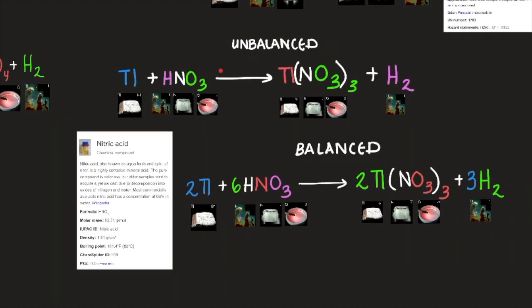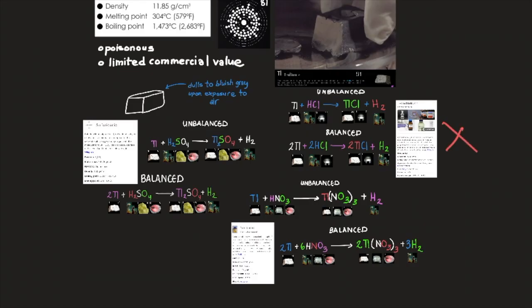Here we have thallium combined with nitric acid to form thallium nitrate and hydrogen gas. And here's the balanced formula. So in nitric acid, thallium dissolves rapidly. Thallium dissolves slowly here, slowly here, but rapidly here. Thallium dissolves slowly in hydrochloric acid and dilute sulfuric acid and rapidly in nitric acid.